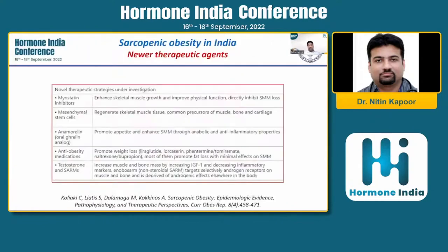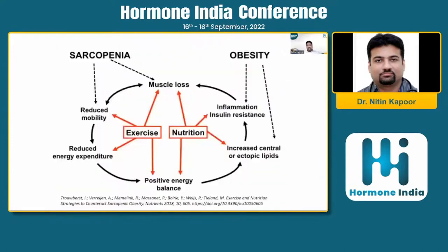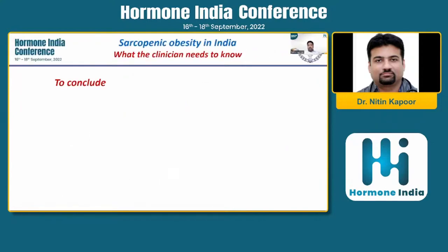Regarding medications: we recommend calcium and vitamin D, but there are currently no specific approved medications for sarcopenic obesity. However, there is a lot in the pipeline — drugs being developed as myostatin inhibitors, oral ghrelin analogs, and several anti-obesity medications are being tested. Hormones play a very important role: premature menopause needs to be addressed, and in men, late-onset hypogonadism needs to be addressed to prevent sarcopenia. In today's world, the treatment of sarcopenic obesity is good exercise — resistance as well as aerobic — reached gradually, and good nutrition with adequate protein but limited calorie intake.